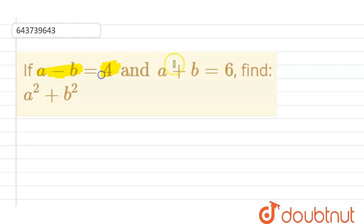So next question we have: if a minus b equals 4 and a plus b equals 6, then find the value of a squared plus b squared.